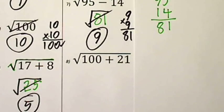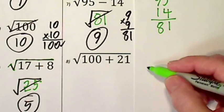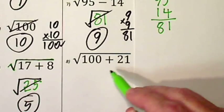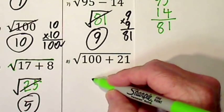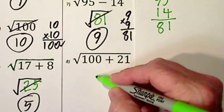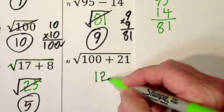Again, we have a grouping symbol. So first we'll combine those two numbers. This you can probably just do in your head, 100 plus 21 is 121.